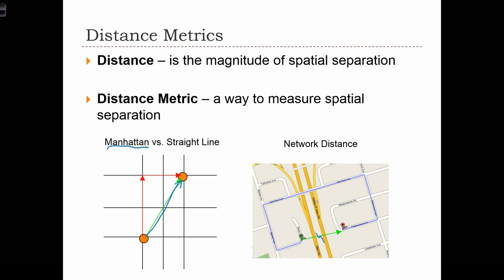And Manhattan distance is just the sum of the vertical distance plus the horizontal distance separating the two points. So if we have a right-angled triangle, here's the right angle, the Euclidean distance is the distance along the hypotenuse, and the Manhattan distance is the distance along the two other sides.